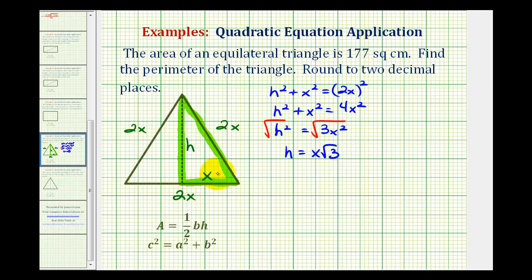And now we can set up an equation to solve for x by using what we know about the area. The area of the triangle is equal to 177 square centimeters. The area of the triangle is equal to 1 half times the base times the height.